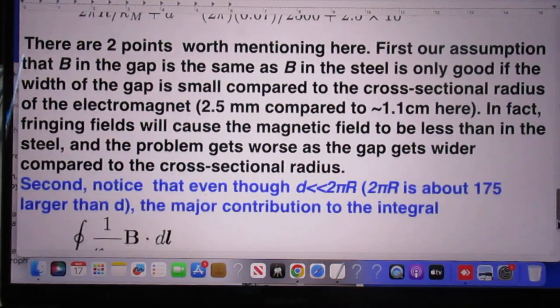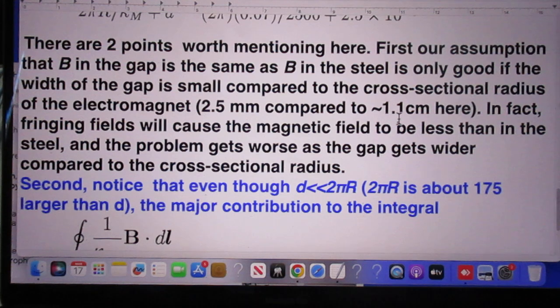There are two points worth mentioning here and that is very important. First, our assumption that the B in the gap is the same as B in the steel is only good if the width of the gap is small compared to the cross sectional radius of the electromagnet. The cross sectional surface is 4 cm. So the cross sectional radius is about 1.1 cm. And so it is only a good approximation if the 2.5 mm of the gap is much smaller than the 1.1 cm.